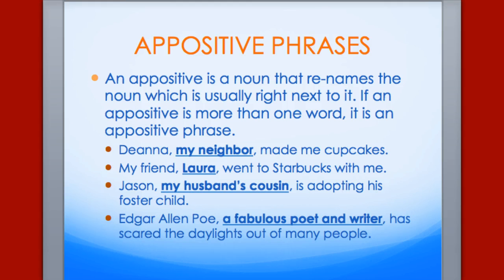We have 'Jason, my husband's cousin,' and we have 'Edgar Allan Poe, a fabulous poet and writer.' Now, if we were to have another verb included — like 'Deanna, who is my neighbor,' 'Laura, who is my friend,' 'Jason, who is my husband's cousin' — this is where we get into a clause because there will be a verb attached. So just hold on to that thought; we'll come back to those.